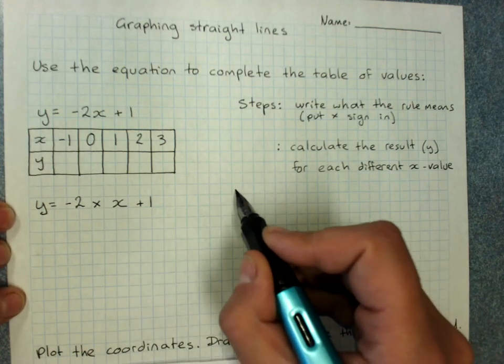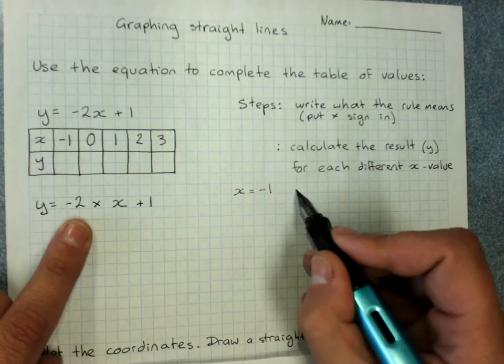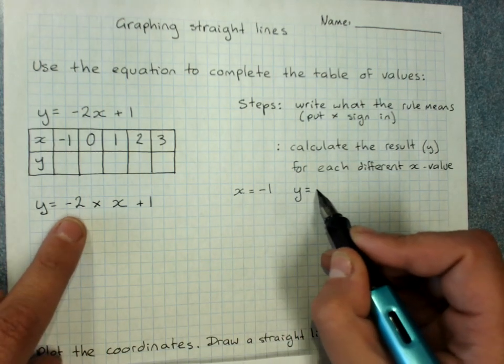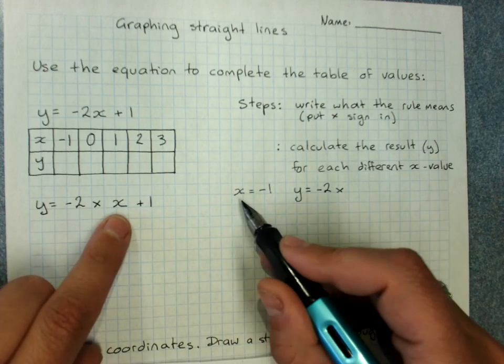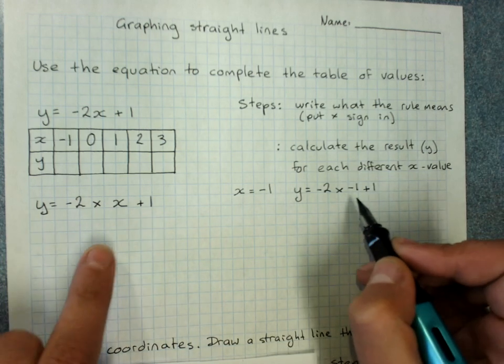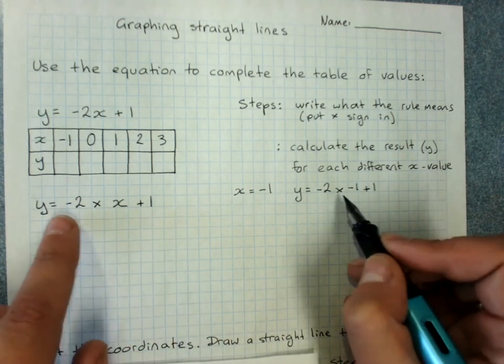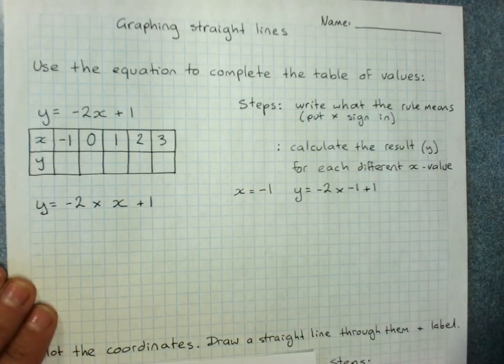Well, if x was negative 1, then I'd get y by doing negative 2 times x is negative 1 at the moment, plus 1. So I've got to do the whole rule with x being negative 1. And do it with your calculator.